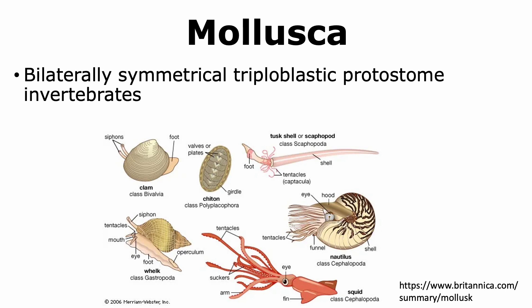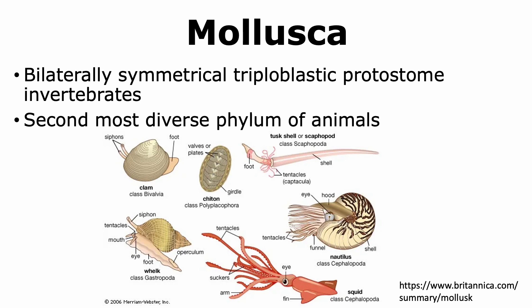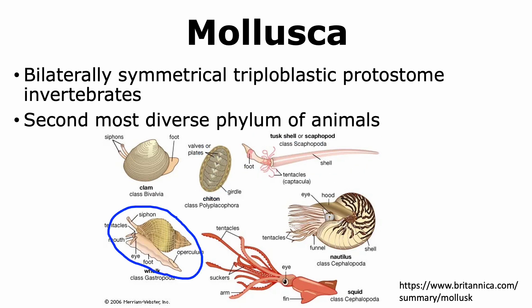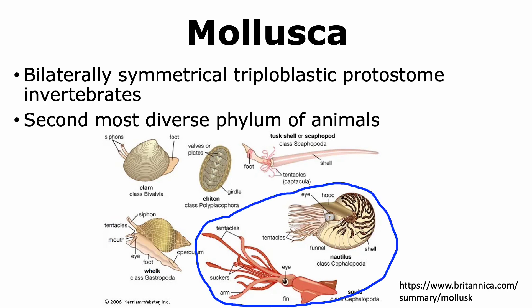Another phylum under the clade Lophotrochozoa is Mollusca. Mollusks are bilaterally symmetrical, triploblastic organisms that are protostomes. Mollusca is the second most diverse phylum of animals. It includes bivalves like clams, chitons, tusk shells, gastropods like snails, as well as cephalopods like octopus and squid — showing a wide variety of sizes and shapes.